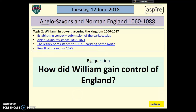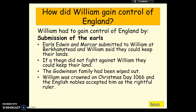One of the first ways that William gained control of England is that he made the earls of the time, Edwin and Morcar, submit to his rule. They had to take an oath to support William, and in return they could keep their lands. William didn't have to worry about the Godwinson family because they'd been wiped out at the Battle of Hastings, so he had all that land in the south to give to his Norman supporters, like Bishop Odo of Bayeux, who became the Earl of Kent. He got crowned king on Christmas Day in 1066, making sure it was a religious ceremony so that people would see him as the rightful ruler of England.